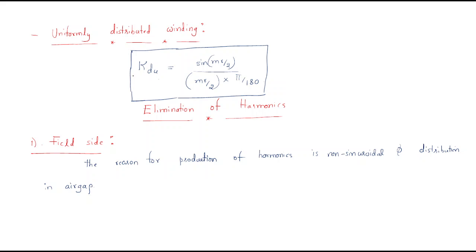Next we will discuss about the elimination of harmonics. The short pitch factor and the distribution factor are used mainly for removing harmonics. Harmonics are mixed with the sinusoidal fundamental waveform and the EMF shape will be disturbed. In order to get the proper EMF, we should remove these harmonics.